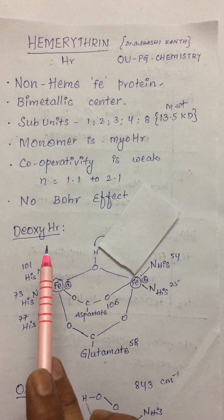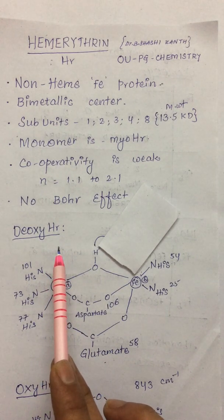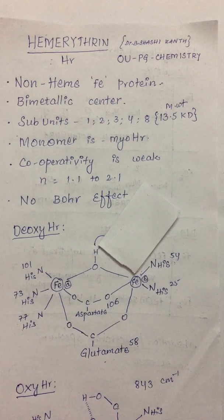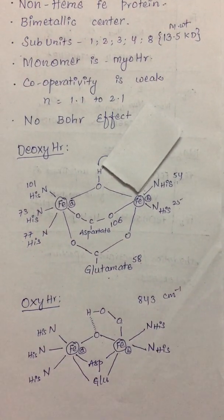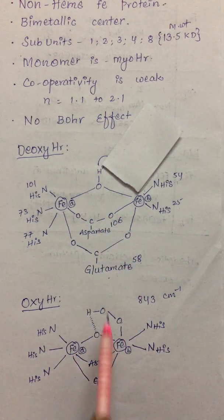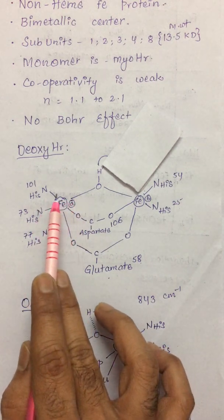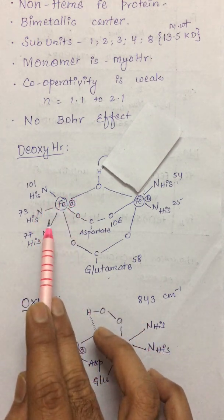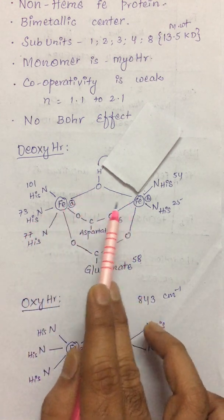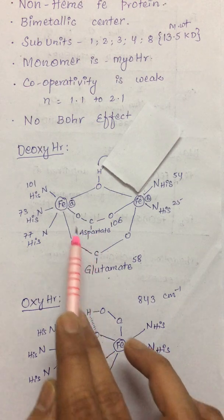One variant is deoxyhemerythrin, where the metallic centers are not bound to dioxygen. The other is oxyhemerythrin, where one of the metal centers is bound to dioxygen. Looking at the geometry of deoxyhemerythrin: iron A is surrounded by six ligands (coordination number six) — three are nitrogen from histidines, one is oxygen from a hydroxo bridge, and the fifth and sixth sites are occupied by oxygens from aspartate and glutamate, which act as endogenous bridges between the two iron centers.